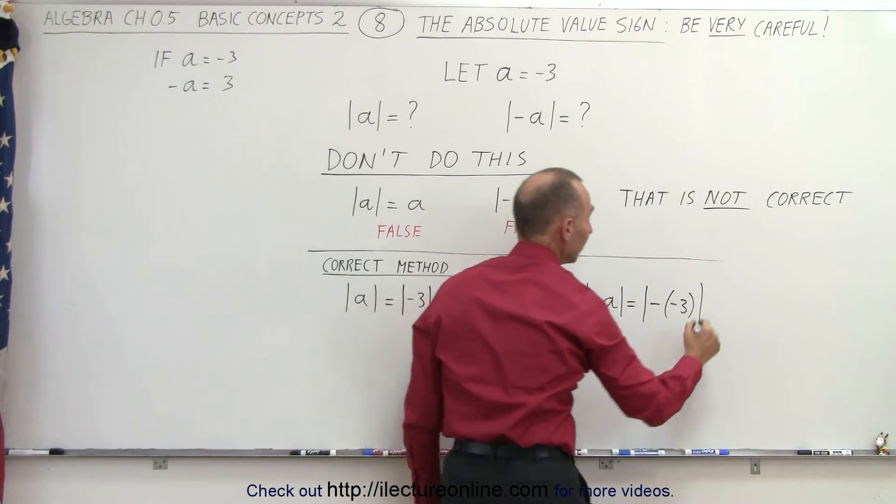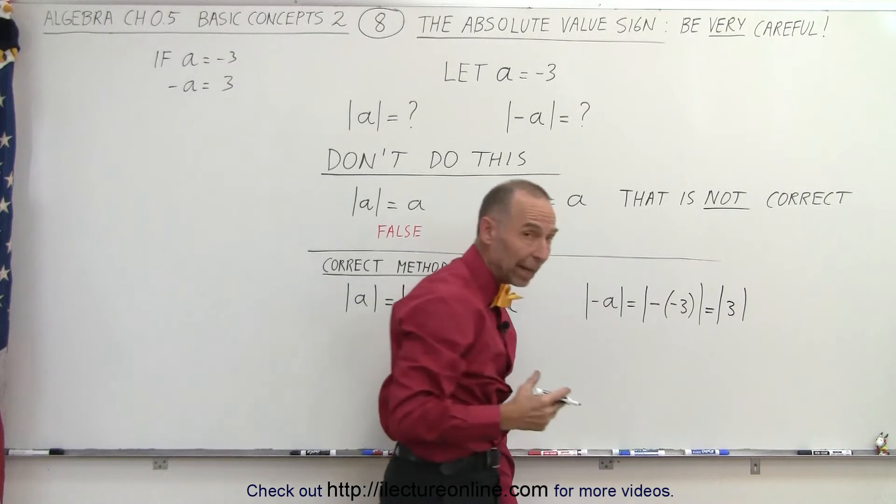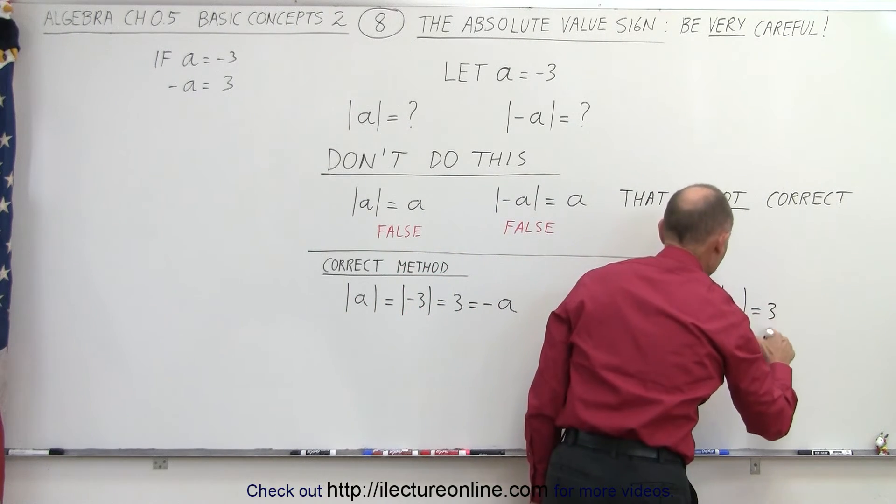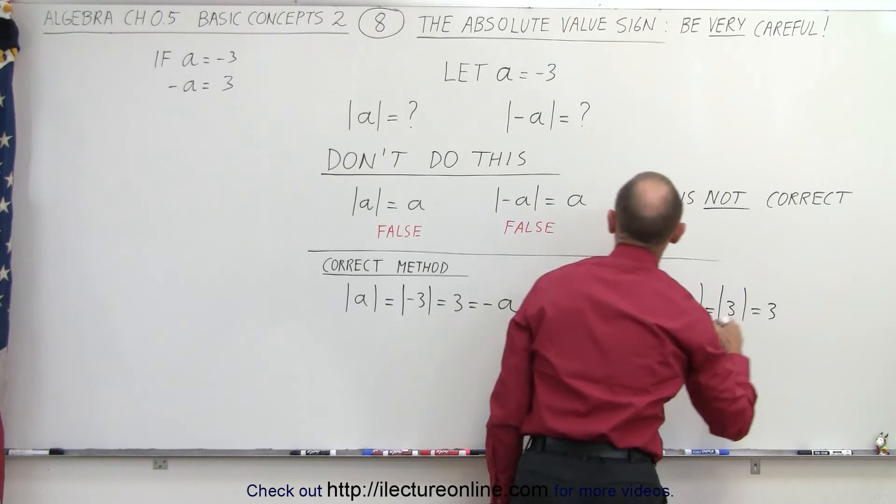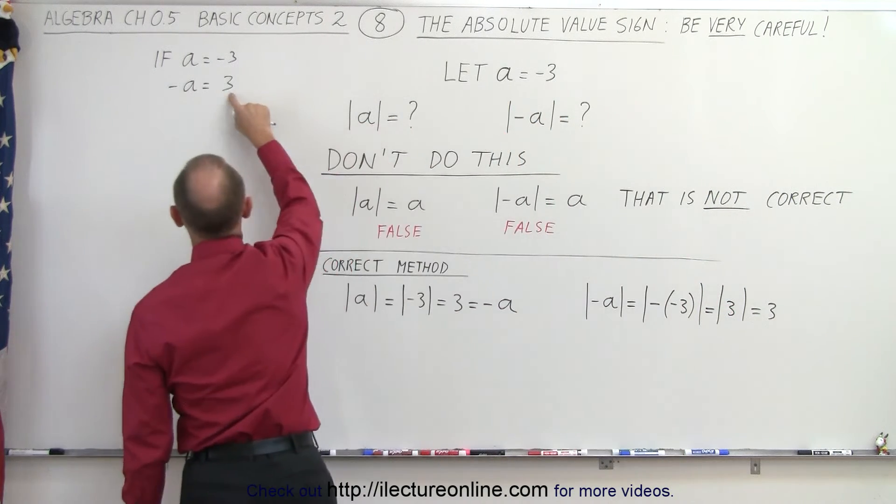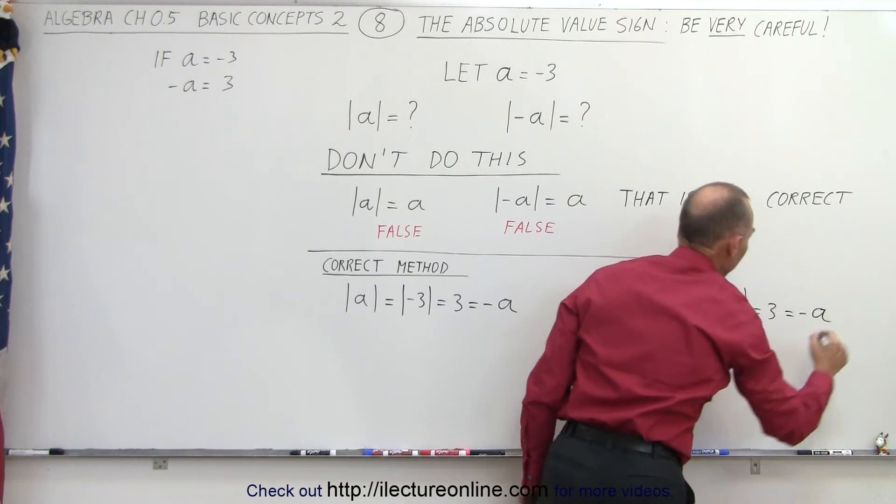Now, a negative times a negative gives us a positive, so this is equal to the absolute value of positive 3. And the absolute value of positive 3, indeed, that is equal to 3. But then, when we want to replace that by a, notice that a equals negative 3, therefore 3 equals negative a. So that means this is also equal to negative a.